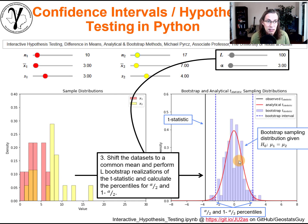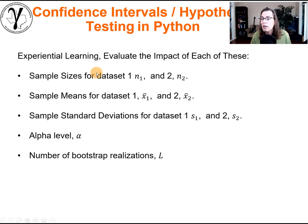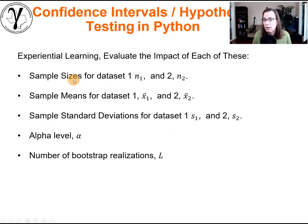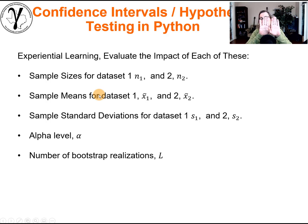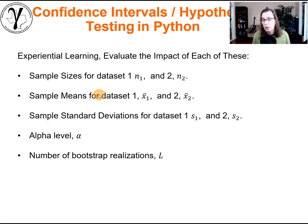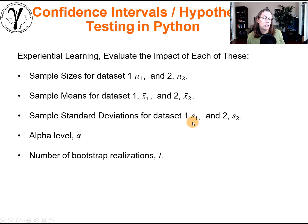We have a really nice workflow where we can observe the effect of changing things. Specifically, we're going to look at what happens when we change the sample size n1 and n2, what happens when we change the sample means and make them further apart or closer, and what happens as we change the sample standard deviations for data sets one and two.